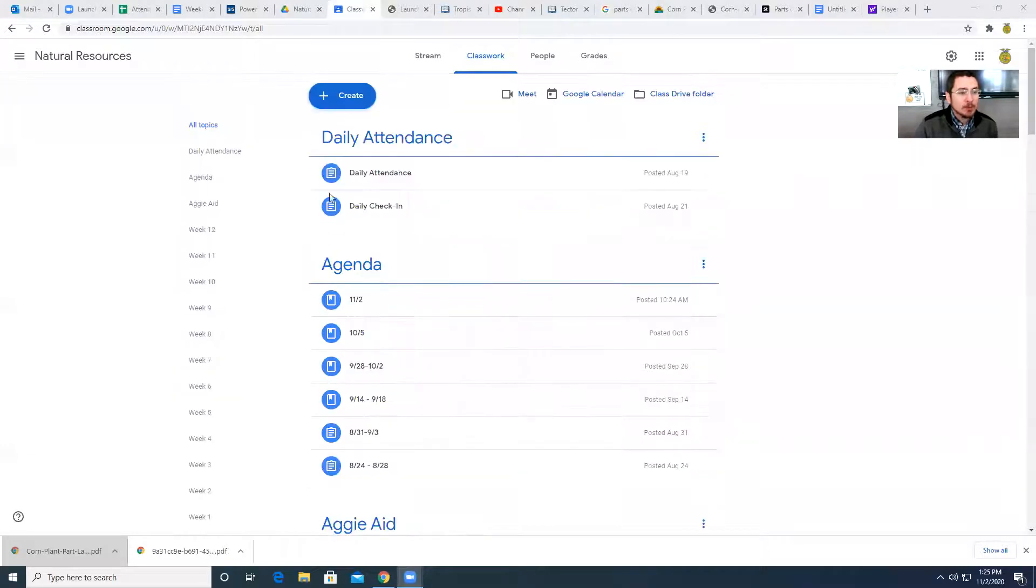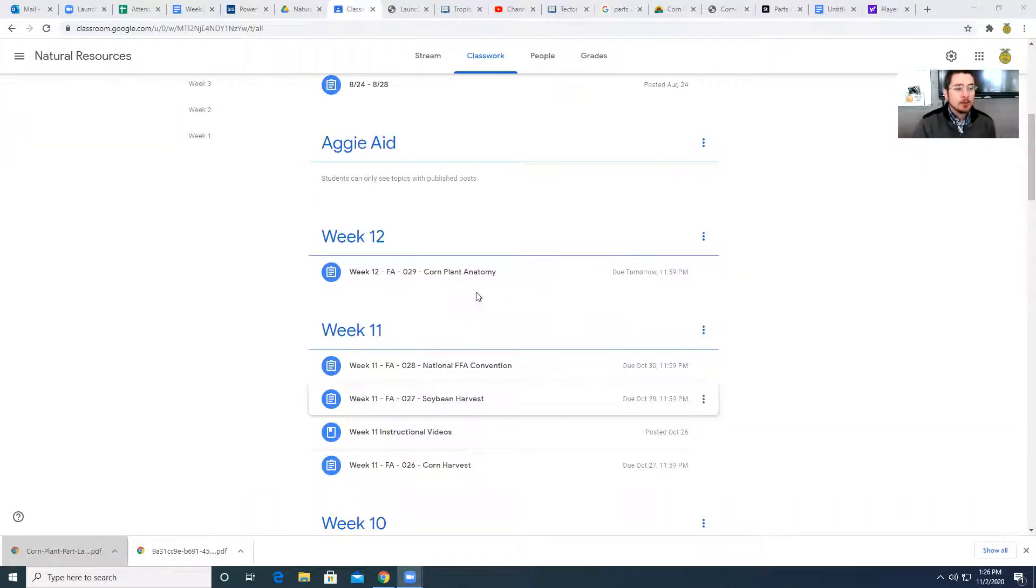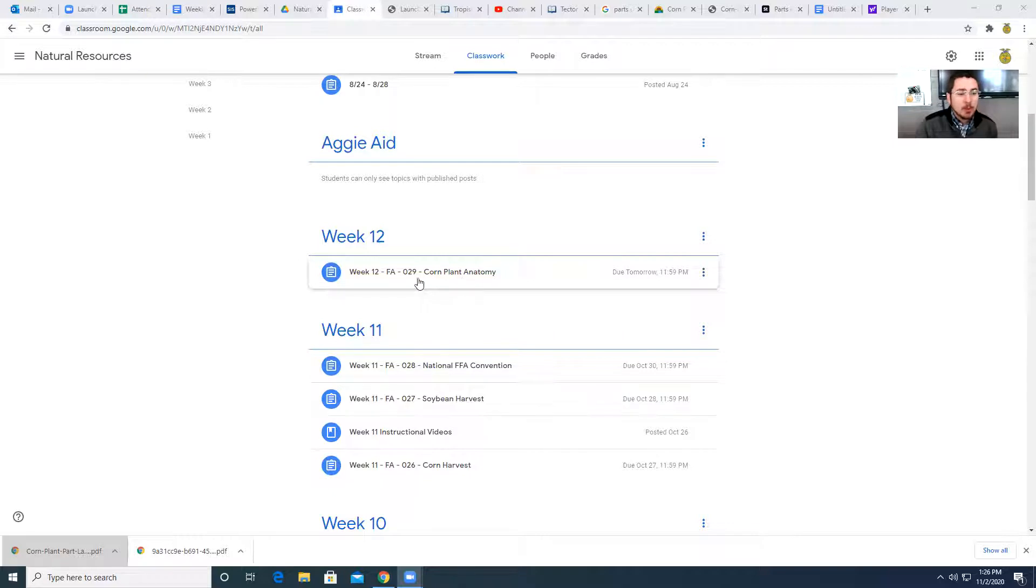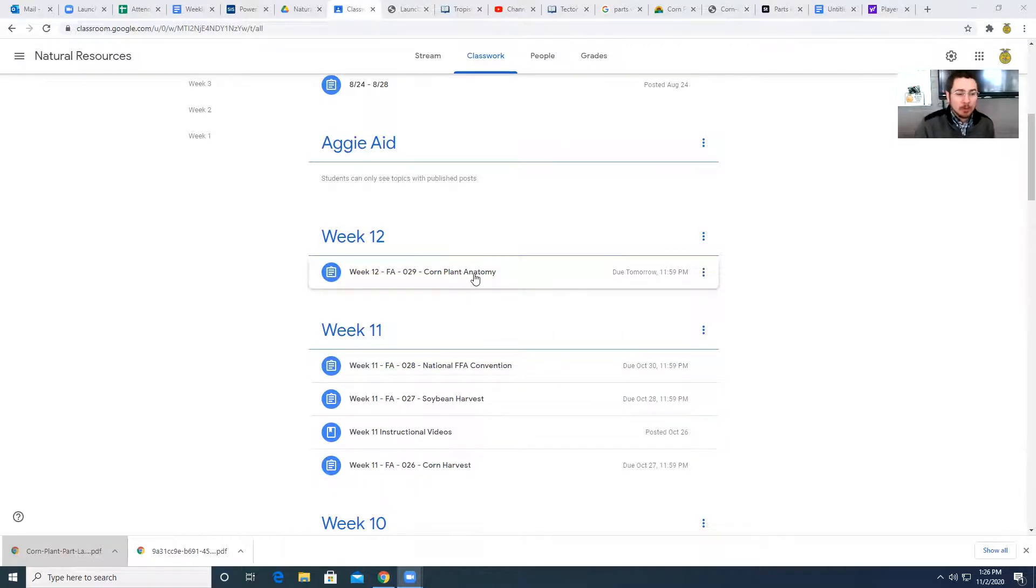Let's go over what we are going to do today because we are going to have a summative in Natural Resources on Thursday. So here's what I'm going to have you do. Under week 12 in our Google Classroom under Natural Resources, we have an assignment for today that's called Corn Plant Anatomy.